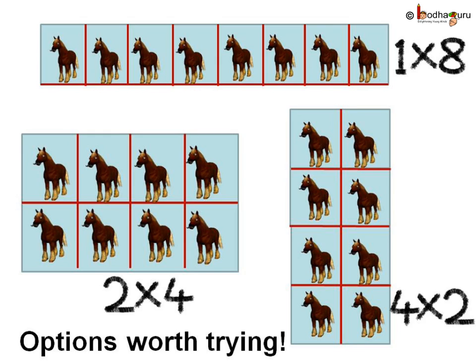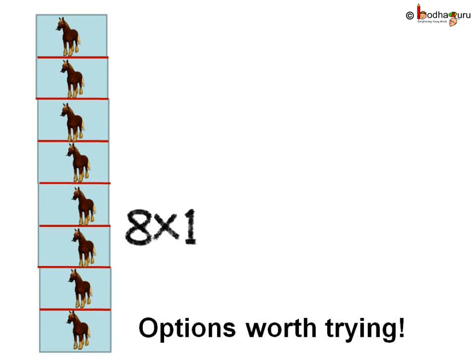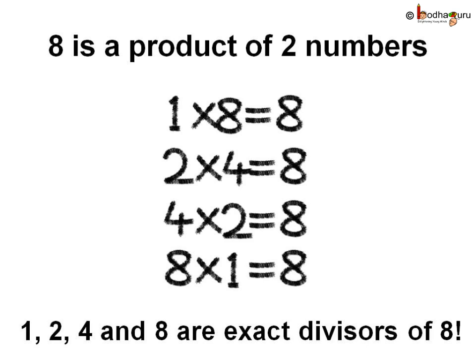Let us see all the options which worked for him. First, 1 row with 8 horses. Second, 2 rows with 4 horses in each row. And 4 rows with 2 horses in each row. And lastly, 8 rows with 1 horse each. This means we can arrange 8 things in different ways such that each row has the same number of things. This also means we can write 8 as the product of 2 numbers in different ways: 1 times 8 is 8, 2 times 4 is 8, 4 times 2 is 8, and 8 times 1 is 8.